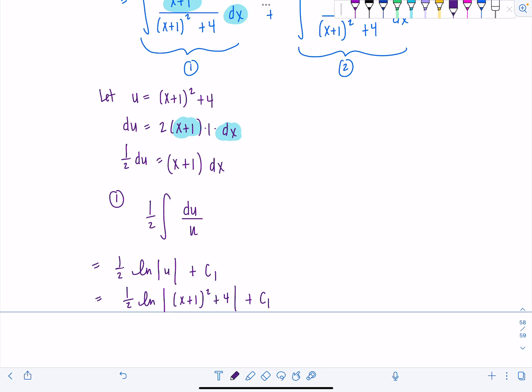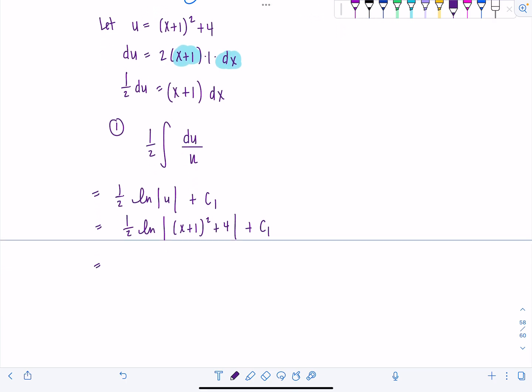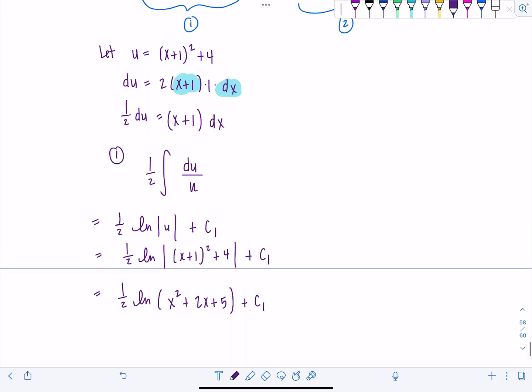And then remember, x plus 1 squared, that's never going to be negative. Plus 4, that's not negative. So I don't need to keep the absolute values here. I could just write this as 1 half ln. Let's multiply it all out to how it originally was. It was x squared plus 2x plus 5 plus c1. So leave that simmering on the back burner. And now let's go knock out integral number 2.